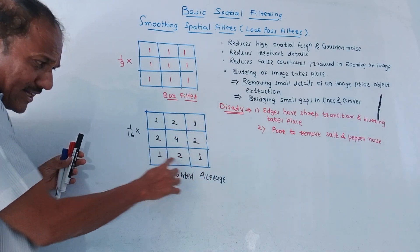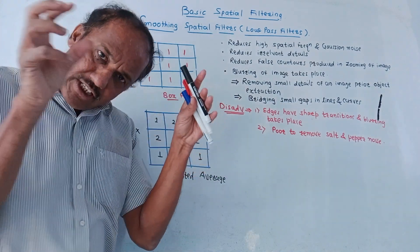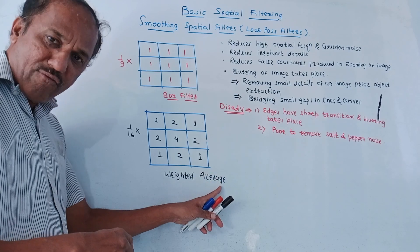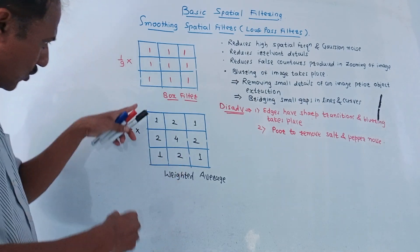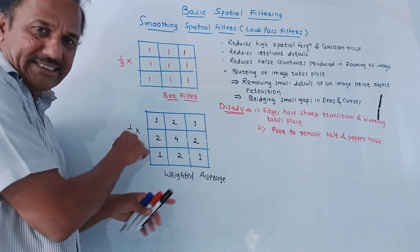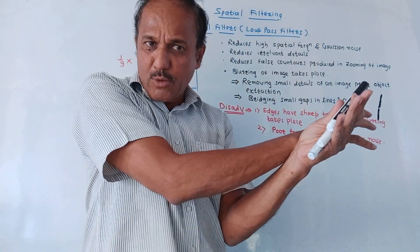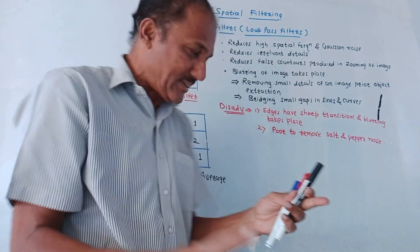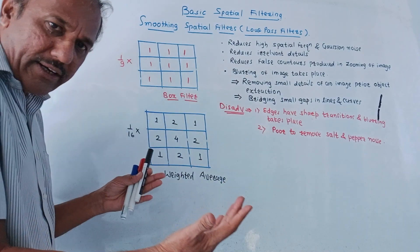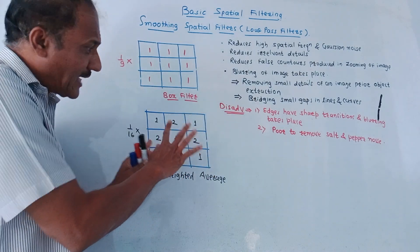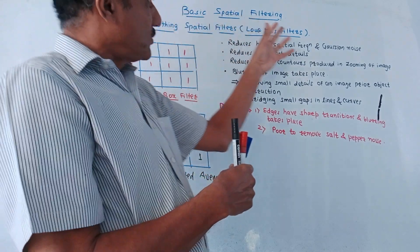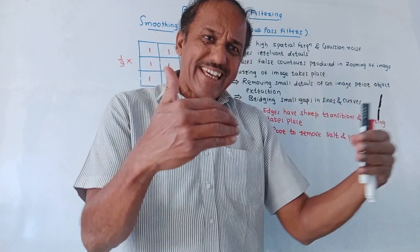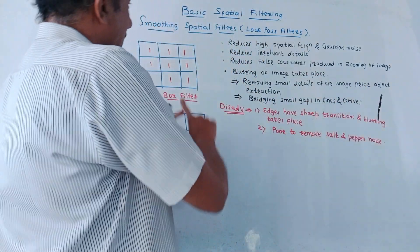The second type of mask has different values. The center pixel is given more weightage — the value at the center is larger compared to all other values. This is called weighted average. If you add all these values, the sum is 16, so the result of this filtering is multiplied by 1/16. We overlap the mask, multiply the mask coefficients with the image coefficients, add all values to get the filter response, and multiply by 1/16. The use of this spatial filtering is primarily for blurring of an image, which is required in pre-processing.